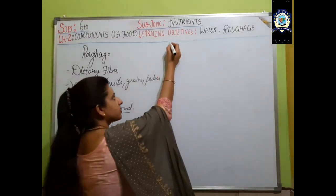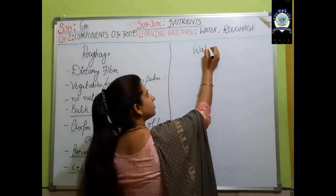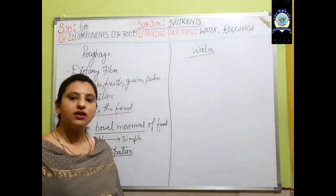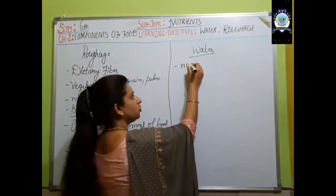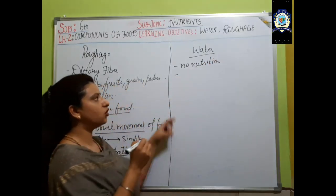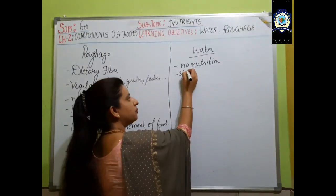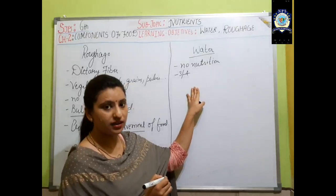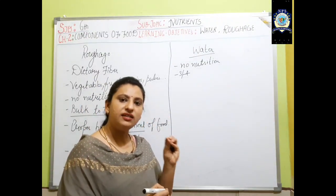Now we are going to discuss the second objective — water. Water is a very essential life liquid. It does not provide any kind of nutrition to the body, but water comprises three-fourths of our body weight and is very important for many functions in the body.